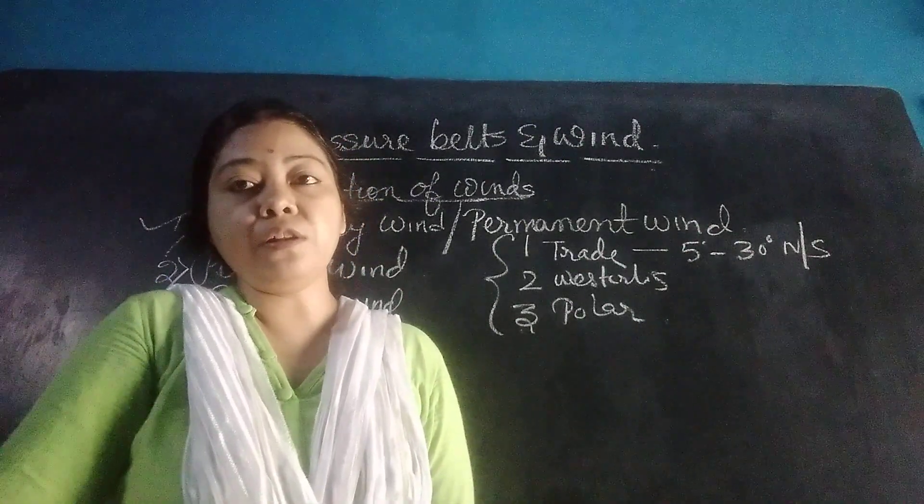Classification of winds. The winds are classified into 4 main groups: Number 1 planetary wind, Number 2 periodic wind, Number 3 sudden wind, and Number 4 local wind. These are the 4 types of wind.